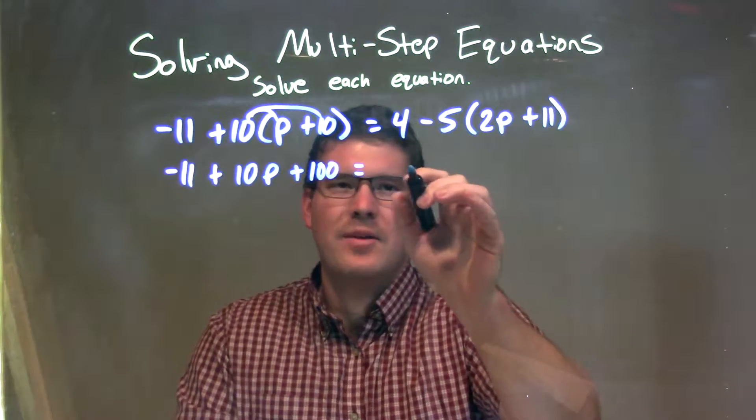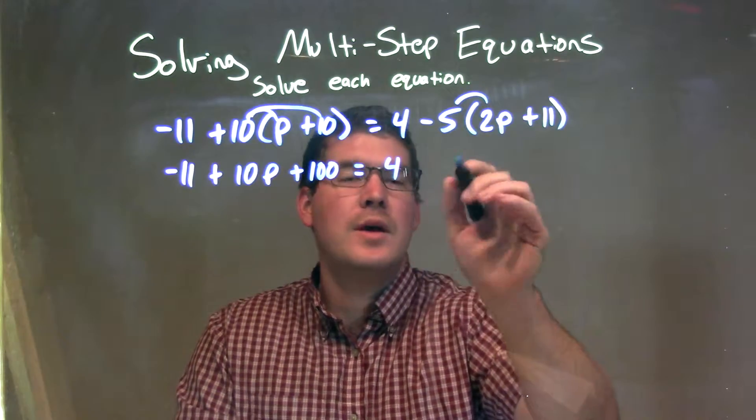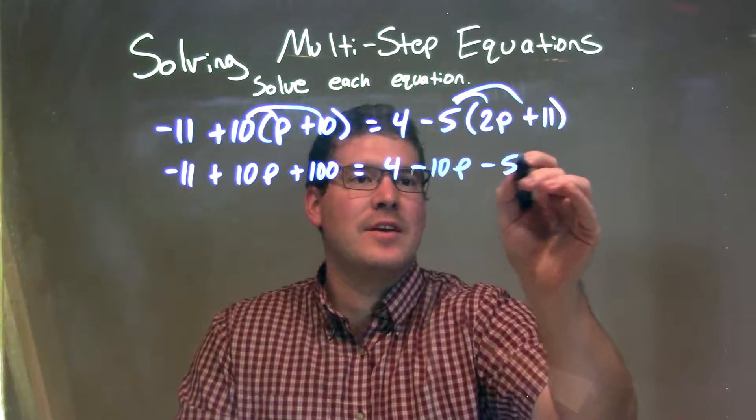On the right-hand side, I'm doing the same thing. I have a 4 here, and I'll distribute the minus 5 across. Minus 5 times 2p is minus 10p, and minus 5 times 11 is negative 55.